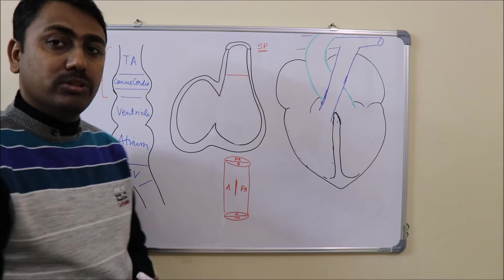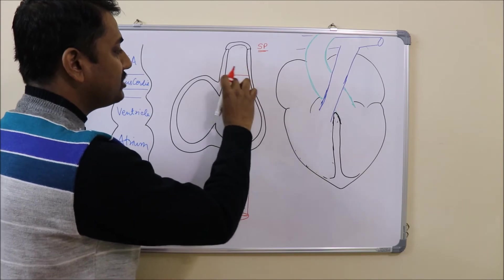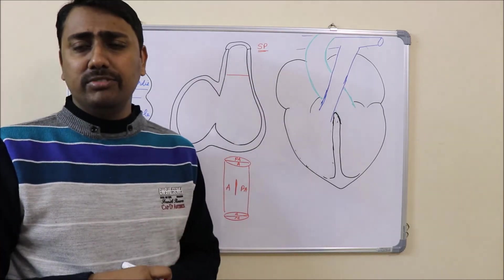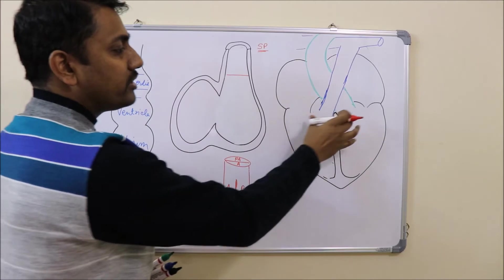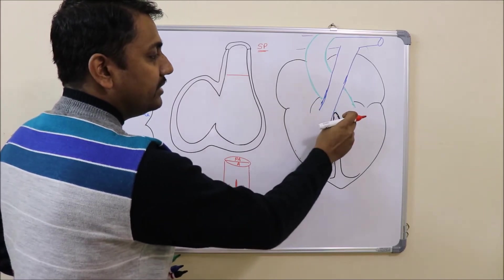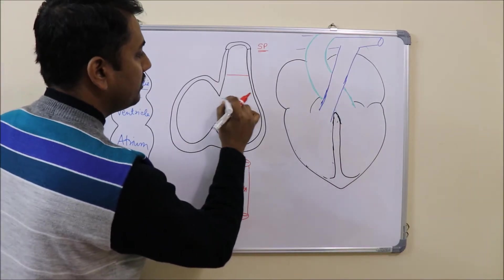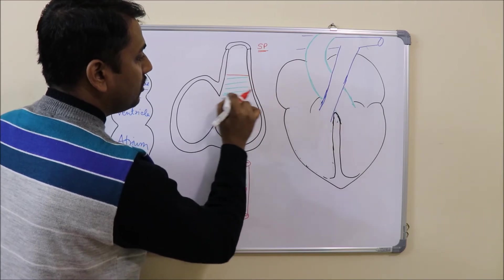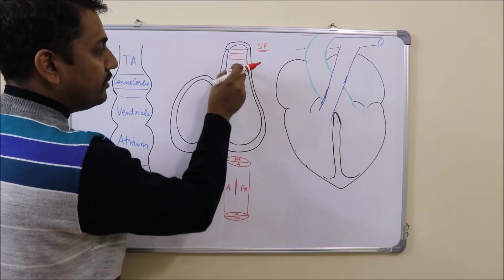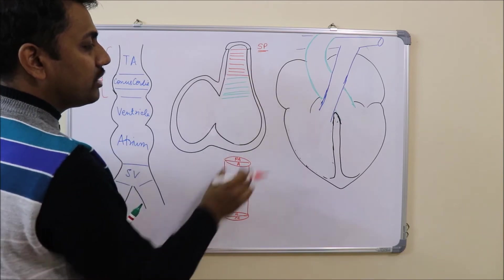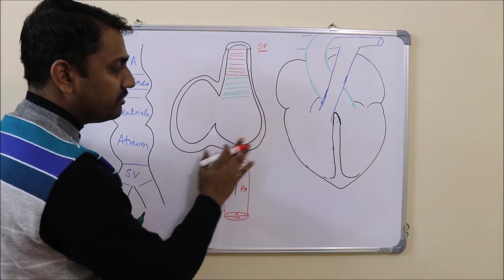This photo shows how the spiral septum looks when we take sections in three regions. In the region of the bulbus cordis, another septum arises known as the bulbar septum or conal septum, which will divide the outflow tract into two: the right outflow tract and the left outflow tract. The bulbar septum will unite distally with the spiral septum to complete this channel.